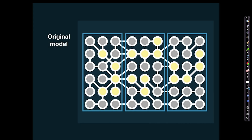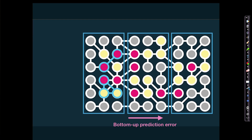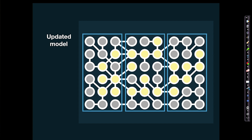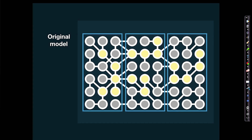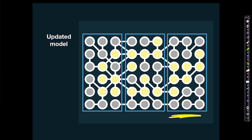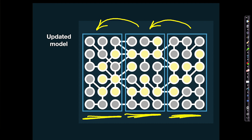Let's look at our original model again. We have these prediction errors, so what does the brain do? It updates its model. The higher-order model of what's in the world is clearly not working, so the brain updates it. This leads to a slightly altered prediction flowing from the highest order down to the middle order, then an updated prediction about what's going on in the lower-order cortices, and finally an updated prediction about sensory information.